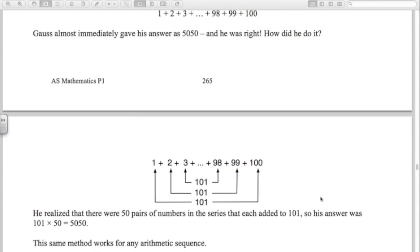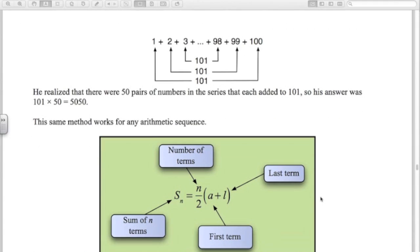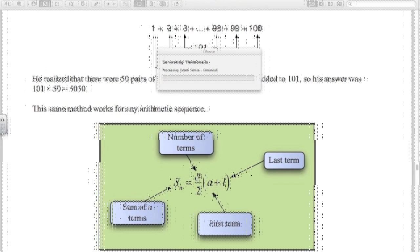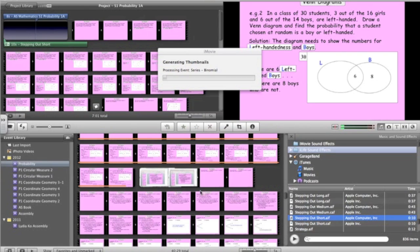So this method works for any arithmetic sequence. Here's the formula. The sum of n terms is we take the first term and add the last term, times it by n over 2. So in Gauss's case, n was 100, 100 divided by 2.